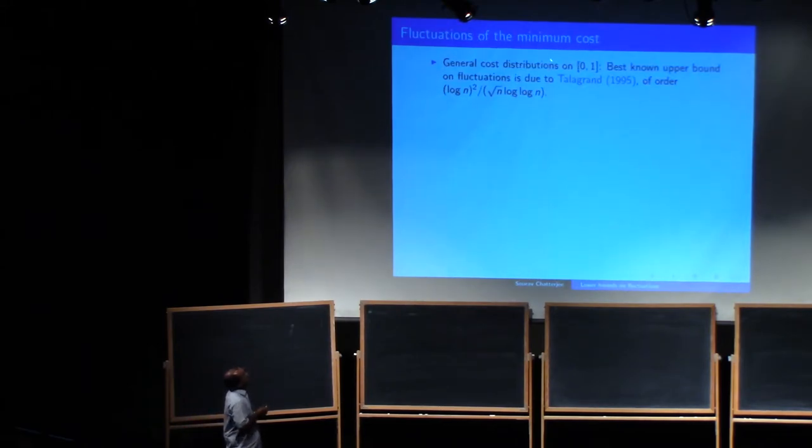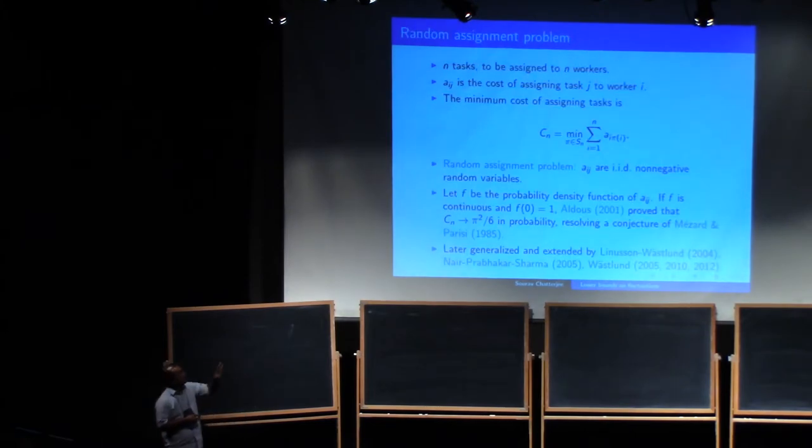Now, how are the fluctuations of the CN, this optimal cost? So first of all, any questions about this model? Is the model clear? The random assignment question.